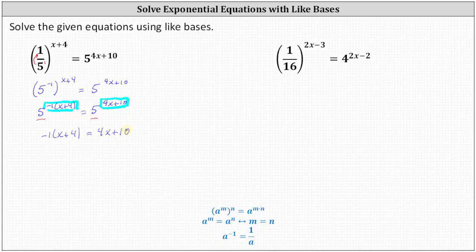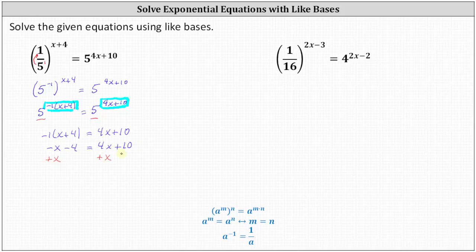Now we solve the linear equation for x. We clear the parentheses on the left side by distributing negative one, which gives us negative x minus four equals four x plus ten. Let's get the x terms on the same side by adding x to both sides, then subtract ten from both sides. Simplifying, negative four minus ten is negative fourteen, and four x plus x is five x.